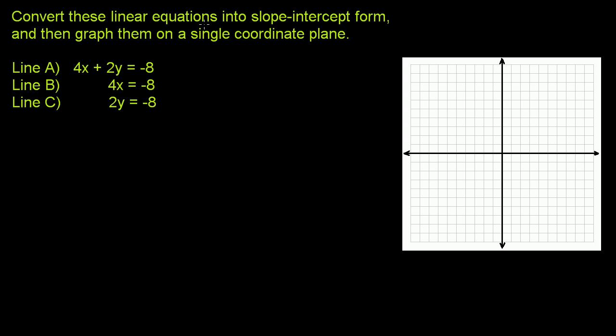We're asked to convert these linear equations into slope-intercept form and then graph them on a single coordinate plane. We have our coordinate plane over here. As a bit of review, slope-intercept form is the form y equals mx plus b, where m is the slope and b is the intercept. That's why it's called slope-intercept form.